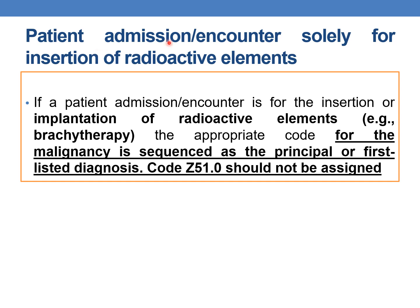Next guideline: Patient's admission or encounter solely for insertion of radioactive elements. If the patient's admission is for the insertion or implantation of radioactive elements, such as brachytherapy, then the appropriate malignancy code is sequenced as PDX, and code Z51.10 should not be assigned — because insertion of radioactive elements is not radiation therapy. Malignancy should be coded first, and Z51.10 should not be assigned.